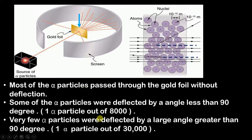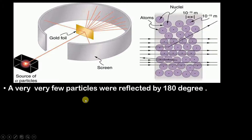To summarize the observations: some alpha particles were deflected by an angle less than 90 degrees — these are the rays deflected slightly from their path. Very few particles were deflected by a large angle greater than 90 degrees — these are the rays reflected back at a particular angle. And very, very few particles were reflected back by 180 degrees, following the same path straight back to the source of alpha particles.